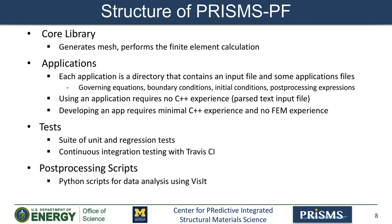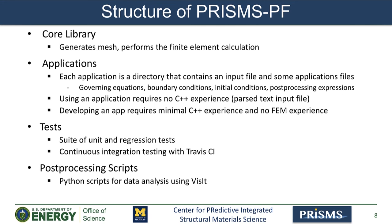Here I want to give a brief overview of the structure of PRISMS-PF. We have the core library, which is the backend part that performs all operations such as generating the mesh, applying boundary conditions, applying initial conditions, and doing the calculations at every time step. It is designed so that a typical user will not have to interact with it. Then we have applications — each application has a directory that contains a file to import parameters and simulation settings, as well as files where the user can set the governing equations, boundary conditions, initial conditions, and post-processing expressions.